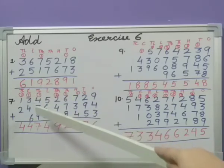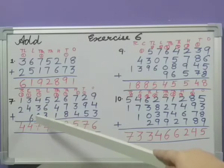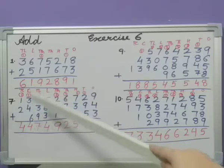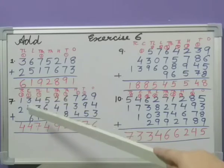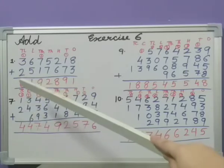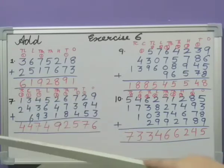3 plus 4 is 7, 7 plus 6 is 13, plus 1 that is 14, 1 carried over again. 1 plus 2 is 3, and again plus 1 that is 4. So here is the sum.